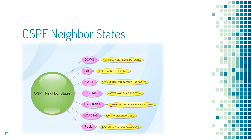In the Exchange state, the router will send Database Description packets to its neighbor — a summary of the entire link state database. It will also use LSR to request LSAs. LSR stands for Link State Request and LSA stands for Link State Advertisement. In the Loading state, the router uses LSR to request the most recent LSAs missed in the Exchange state. LSR is like a request, and replies to that request are LSU — Link State Update.